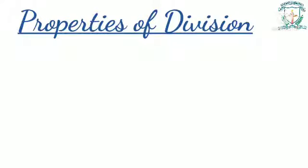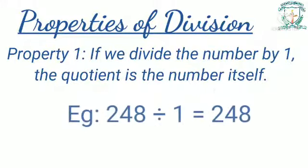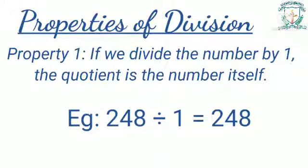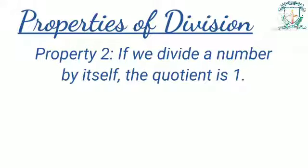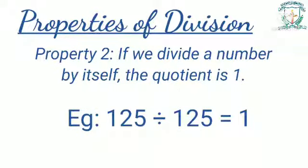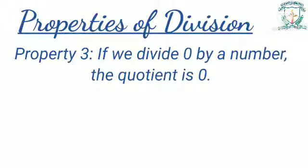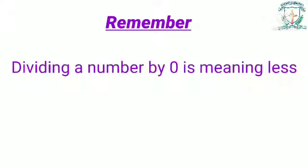Properties of division. Property 1: if we divide a number by 1, the quotient is the number itself. For example, 248 divided by 1 equals 248. Property 2: if we divide a number by itself, the quotient is 1. For example, 125 divided by 125 gives 1 as the quotient. Property 3: if we divide 0 by any number, the quotient is 0. For example, 0 divided by 128 equals 0. Remember: dividing a number by 0 is meaningless.